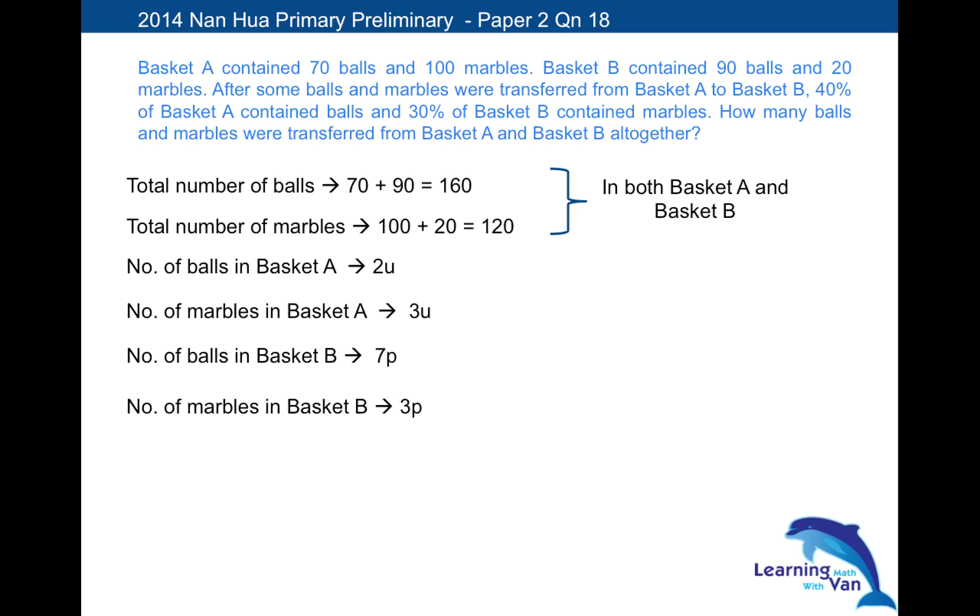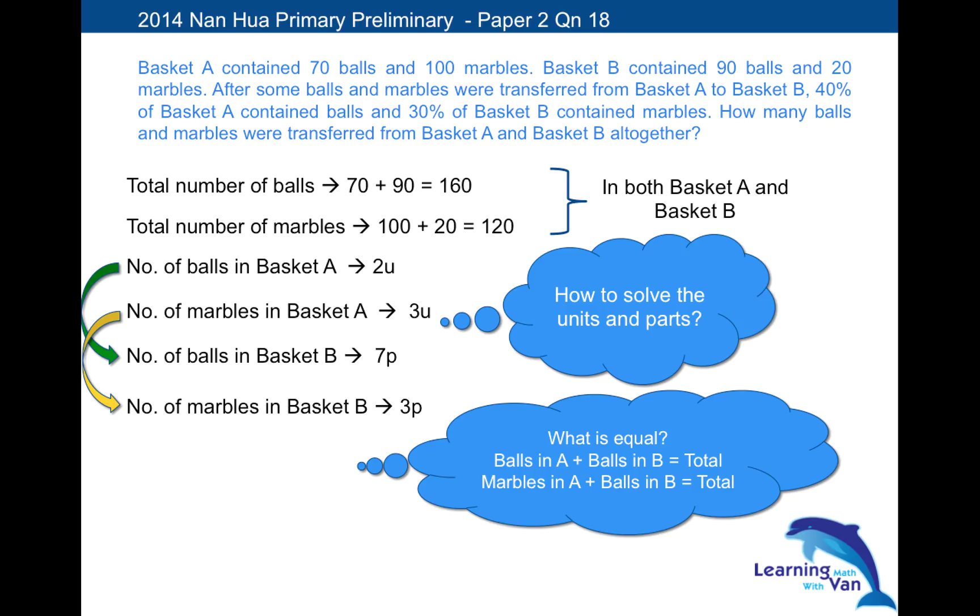So what's the next step? The next step is always to solve the units and the parts. And how do we solve it? It's to think of something equal to something. So what is equal here? So let's take a look. Look at the arrow. What can you see? Number of balls in basket A, number of balls in basket B. So what does it equal? Can't see? So how about this one? If you add the number of marbles in basket A to the number of marbles in basket B, what do you get? Don't you get a total? Isn't it your equation? But of course we don't like equation. We just draw the arrow sign. But basically they are the same.